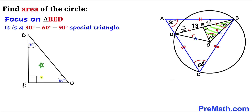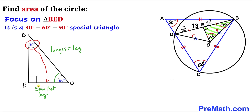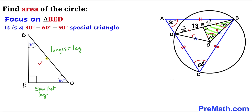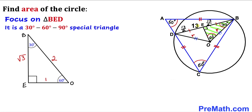Copying triangle OEB: angle B is 30°, angle O is 60°, angle E is 90°. In a 30-60-90 triangle, the side opposite 90° (the longest side OB) is twice the smallest leg, and the side opposite 60° equals √3 times the smallest leg. The standard sides are 1, √3, and 2. In our case, BE = 13/2.